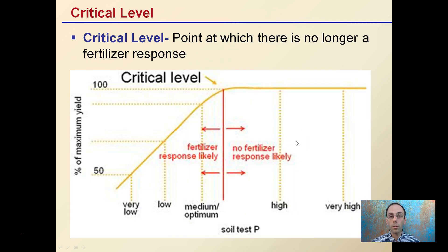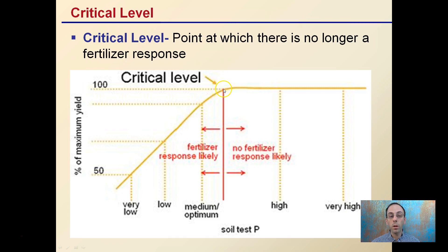Something called a critical level is the point at which there's no longer a fertilizer response. At very low levels, adding fertilizer improves yield — getting better yield each time — until we reach this critical level and achieve that theoretical 100% yield. Adding any more fertilizer beyond that point, you're not going to get any increase in yield. Beyond this critical level, you're increasing your input costs for no return.